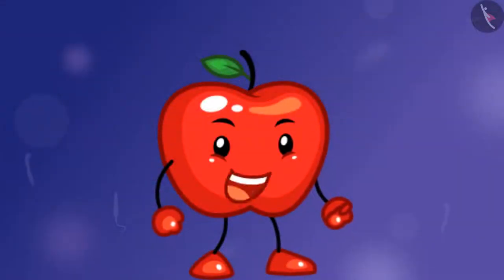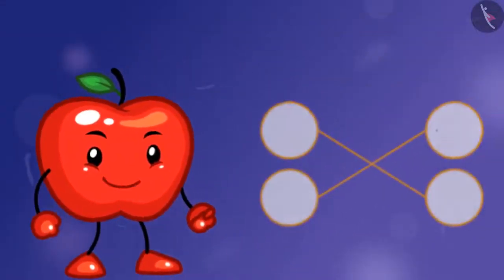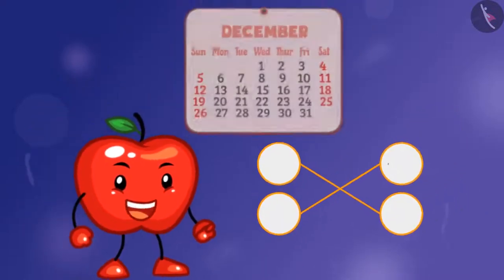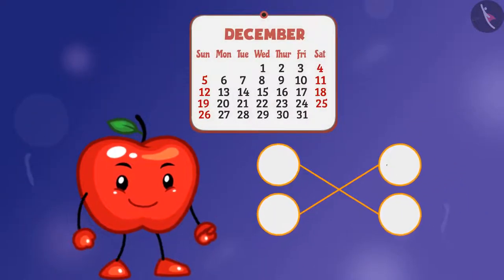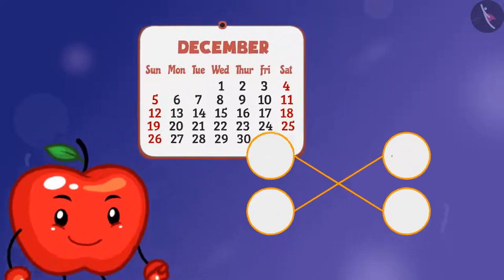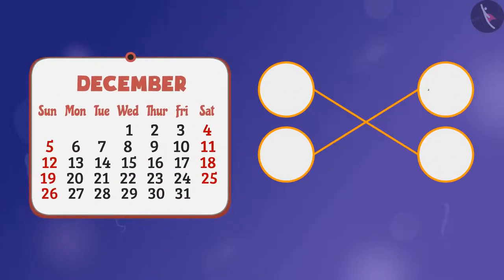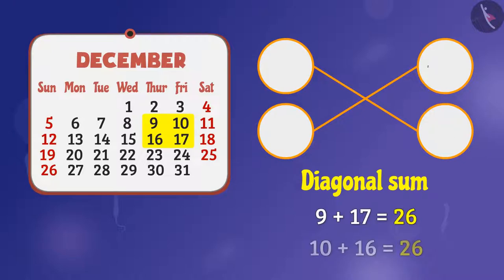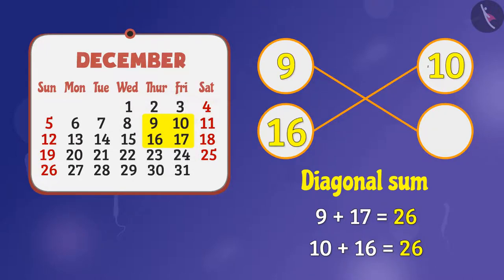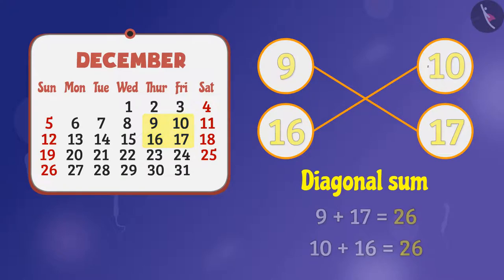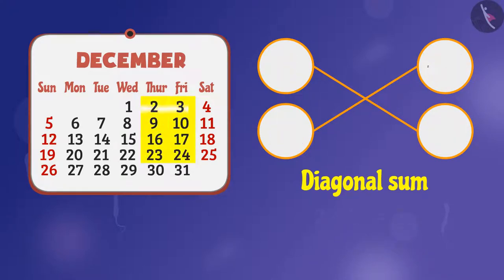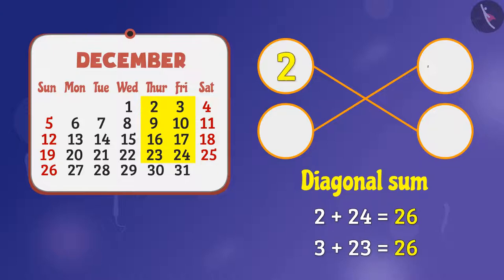Now let me tell you that here also we can use the calendar to solve the puzzle. See this calendar — the diagonal sum of this second order square is 26. Hence we can use these numbers to fill the star like this. Similarly, we can also use these numbers to fill the star like this.